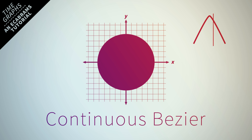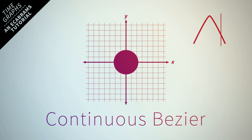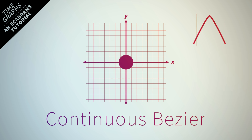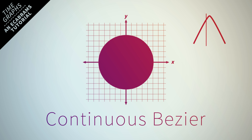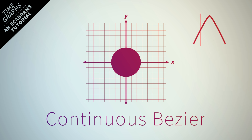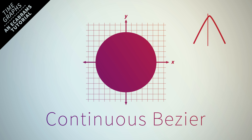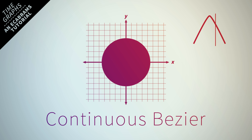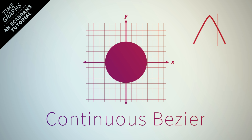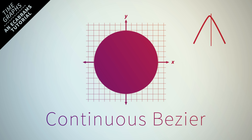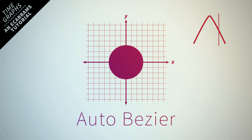This next one is the continuous bezier. There are two types of beziers, and a bezier — if you've used something like Illustrator or Photoshop to work with paths — is a type of curve influenced by two points, sort of like a line that comes off of the point and influences the curvature. When you look at the curve here you can see there's been a bezier applied to all the points, and where they're pointing is different than with the easy ease. The other type is called the auto bezier.